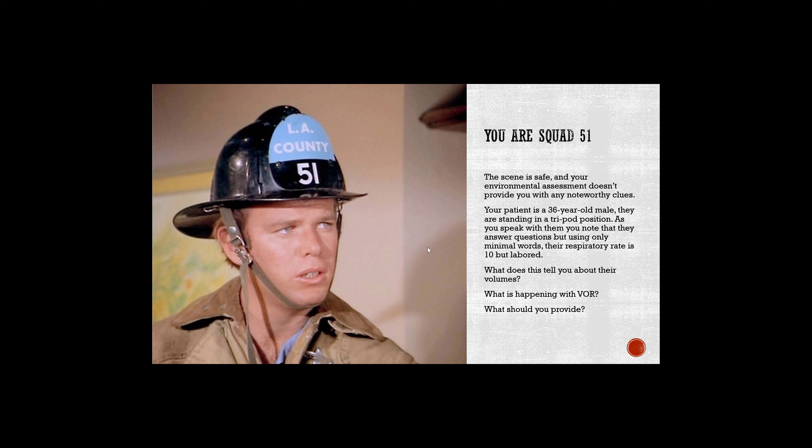Back to being Squad 51: the scene is safe and your environment assessment doesn't give you anything noteworthy. You're across from the sausage factory. The patient is a 36-year-old male standing in a tripod position. As you speak with them, you note they answer questions using only minimal words. Their respiratory rate is about 10 but very labored — it's hard for them to breathe. What does this tell you about their volumes? What's happening with ventilation, oxygenation, and respiration? What type of assistance should you provide, and what are you worried about?